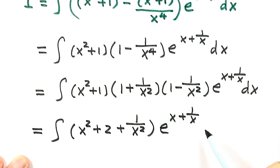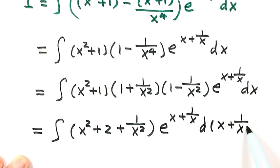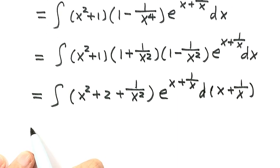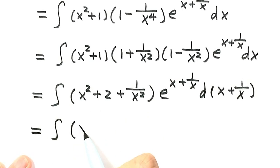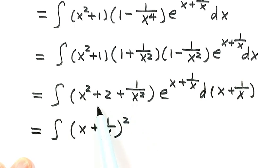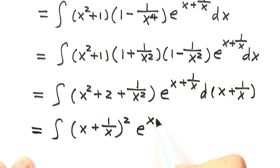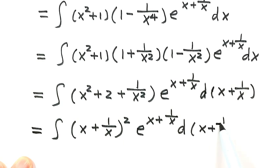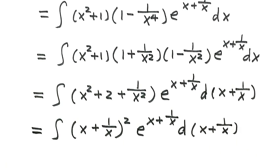Put this back here — that's d of x plus 1 over x. For this part we can make it a complete square. So that's x plus 1 over x, squared. You can easily check it. So then write down the rest: e to the power of x plus 1 over x, d of x plus 1 over x. We notice that x plus 1 over x repeats here, here, here, and here.